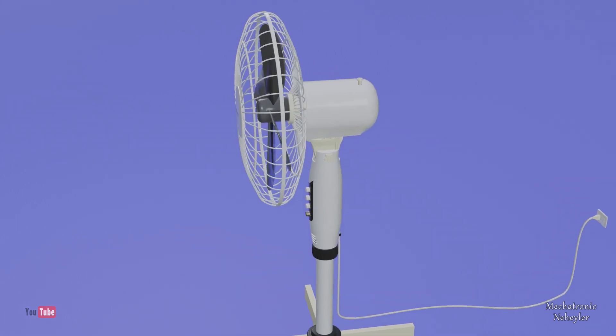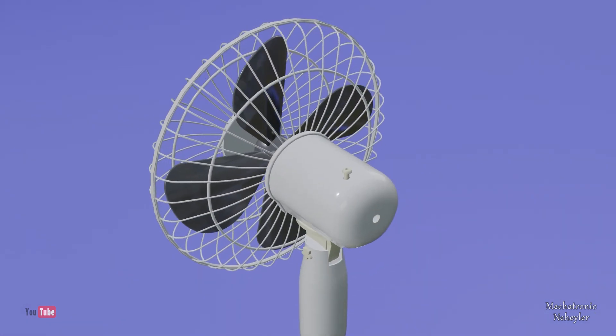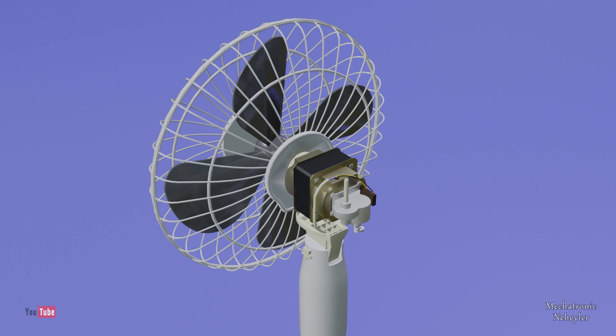If you have a fan similar to this one, then you can remove the case by removing the screw on the back and also removing the pin by pulling up. In this way we can now remove the casing that covers the internal parts of the fan.